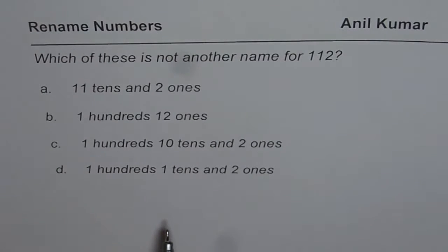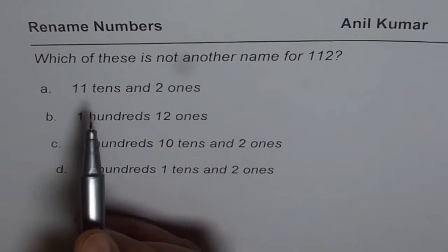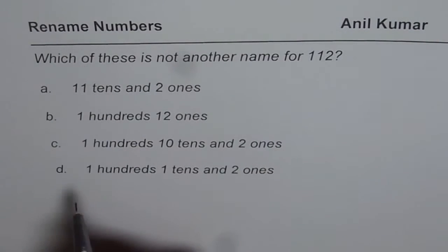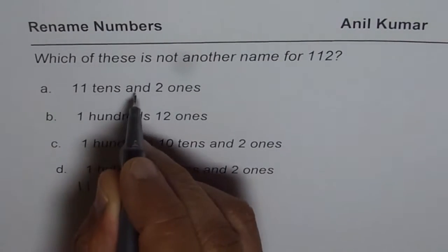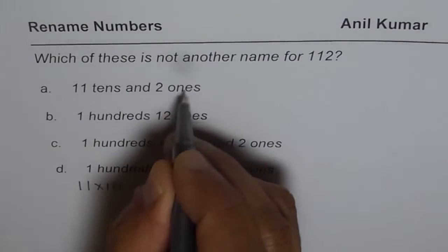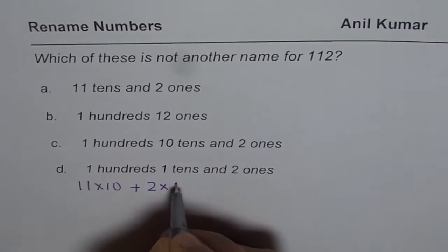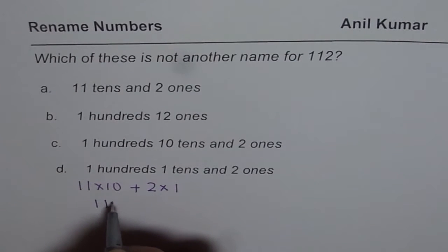Let us understand what these descriptions represent. When we say 11 tens, so 11 times 10 is 11 tens and plus 2 ones, 2 times 1, that means 110 plus 2 and that is 112.